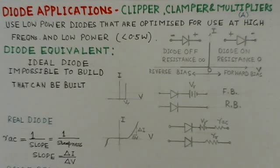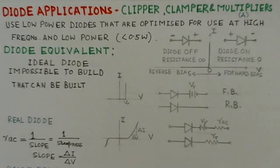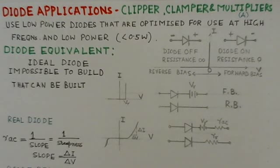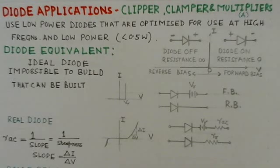This video is the last video in our applications series. The applications covered are clippers, clampers, peak detectors, and voltage multipliers. This video will be uploaded in two parts. Part A will give the diode equivalents and Shockley equation, as well as cover clippers and diode clamps. Part B will consist of diode clampers, peak detectors, and multipliers.